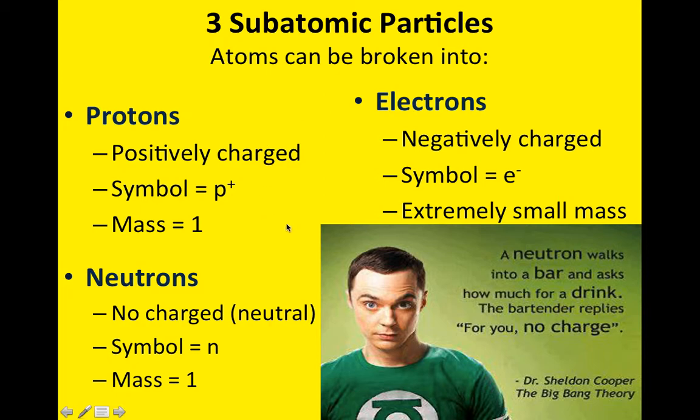Protons are positively charged, and the symbol for that would be a P with a plus sign, and its mass value is at one. Protons are found in the nucleus as well. Neutrons are next, and they have no charge, or they're neutral. Look at the word neutron. Take the O-N off and add an A-L. Neutrons are neutral. The symbol for that is an N, and the mass is one as well.